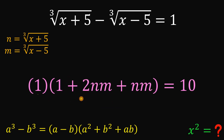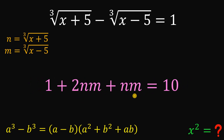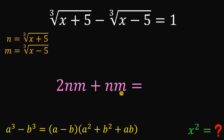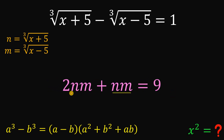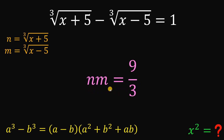Let's simplify using the values we know. n minus m is 1, and n squared plus m squared is 1 plus 2nm. Substituting into the factored expression: 1 times (1 plus 2nm plus nm) equals 10. Subtracting 1 from both sides gives 3nm equals 9. Dividing both sides by 3, we get nm equals 3.